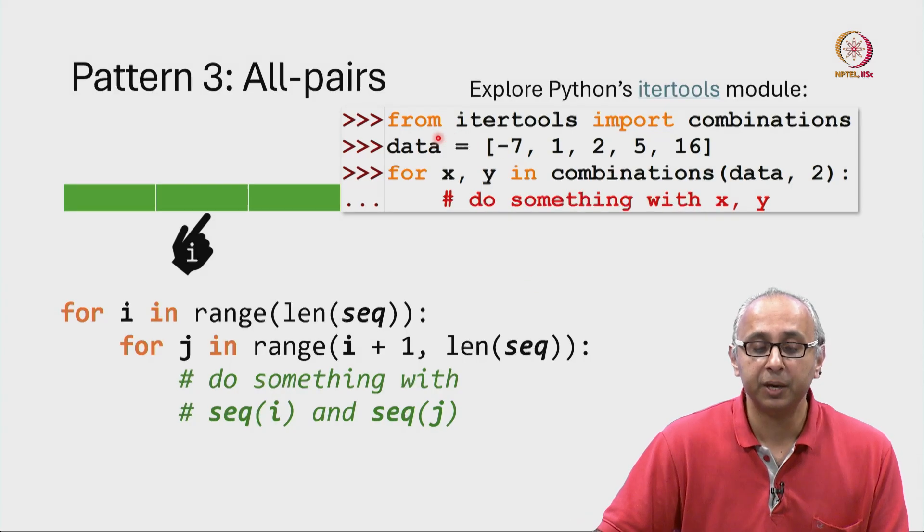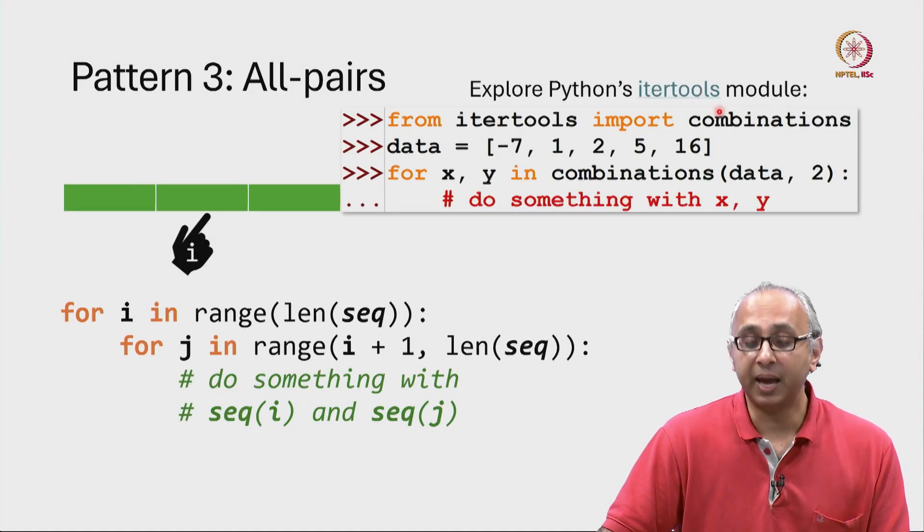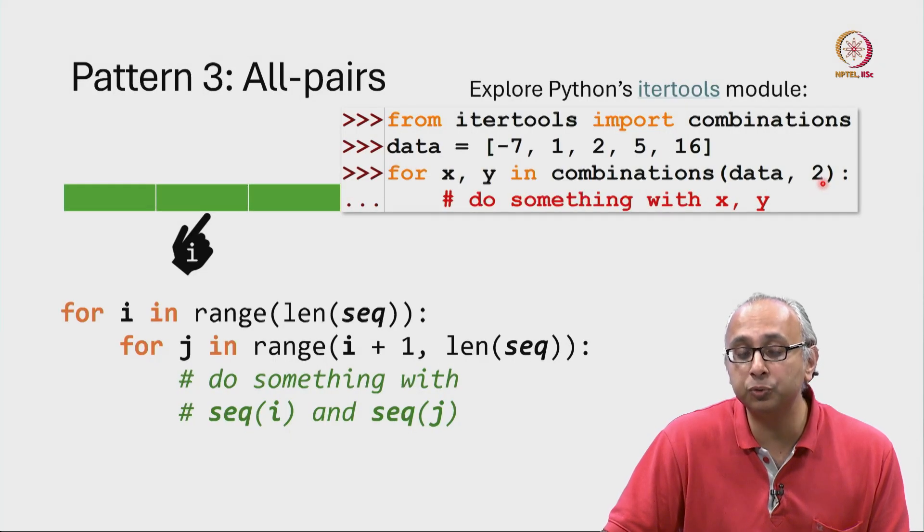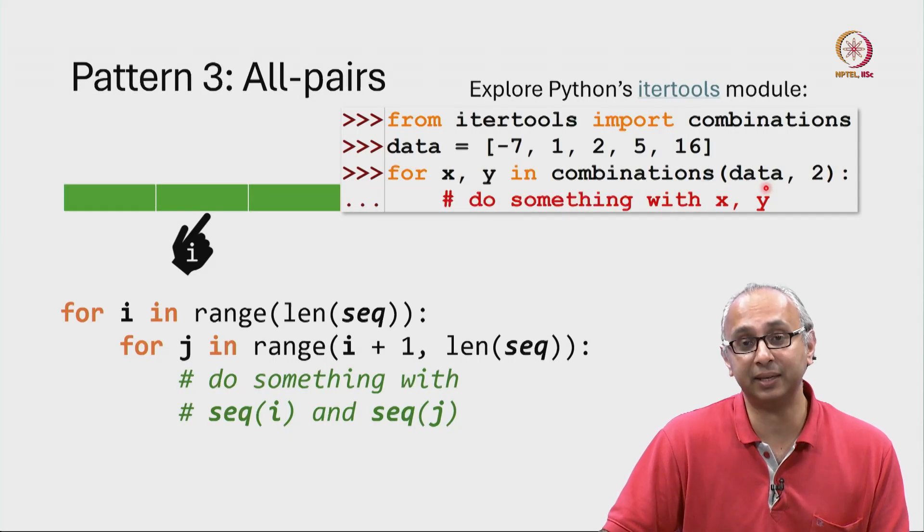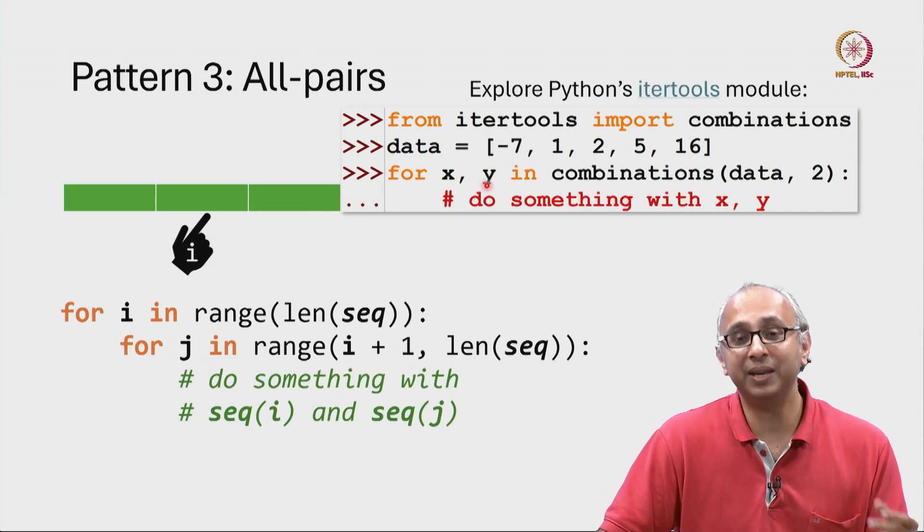Here is how you use it. We say from itertools import whichever functions you need. So, read the documentation and in this case, I only am using the combinations function. Now if I have this particular list, I can create all combinations of size 2 from the data in that list. And then I can simply say for every x and y in that pair, do something with x and y.